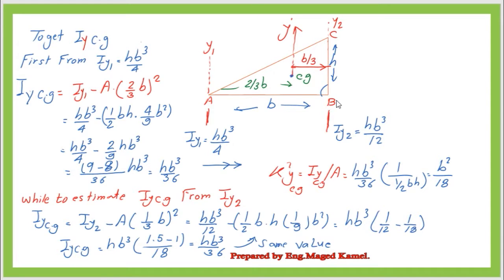From the Y2 side, we also estimate the moment of inertia at the CG. The horizontal distance in this case is only B/3. With IY2 = HB³/12, we get IY_CG = IY2 minus the area multiplied by the square of the distance (1/3 B): HB³/12 minus (½BH)(1/3 B)². This gives HB³ multiplied by (1/12 − 1/18), which equals HB³/36. Comparing the two values, we confirm that our calculation of IY at the CG is correct.